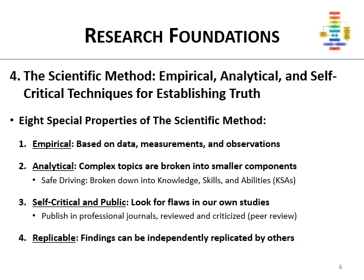It's replicable — probably one of the most important properties. Scientific things have to be replicable, meaning repeatable. If other people can't independently replicate or repeat your results, then we assume it wasn't a real finding. No single study establishes facts. The truth — or as close as we get to it with the scientific method — is established by the consensual validation of peers: repeating studies under different conditions and showing the same things.